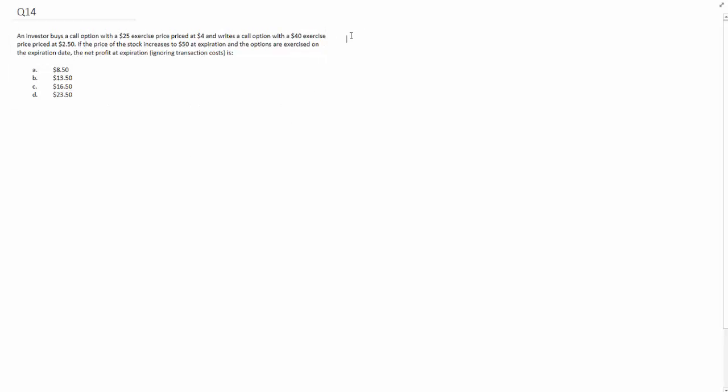Now, whenever you deal with a question like this related to a derivative, you must first know what is the structure. In the question, they buy a call option at a $25 exercise price and also write or sell a call option with a $40 exercise price. So basically, the strike of the written call option is higher than the strike of the long call option.